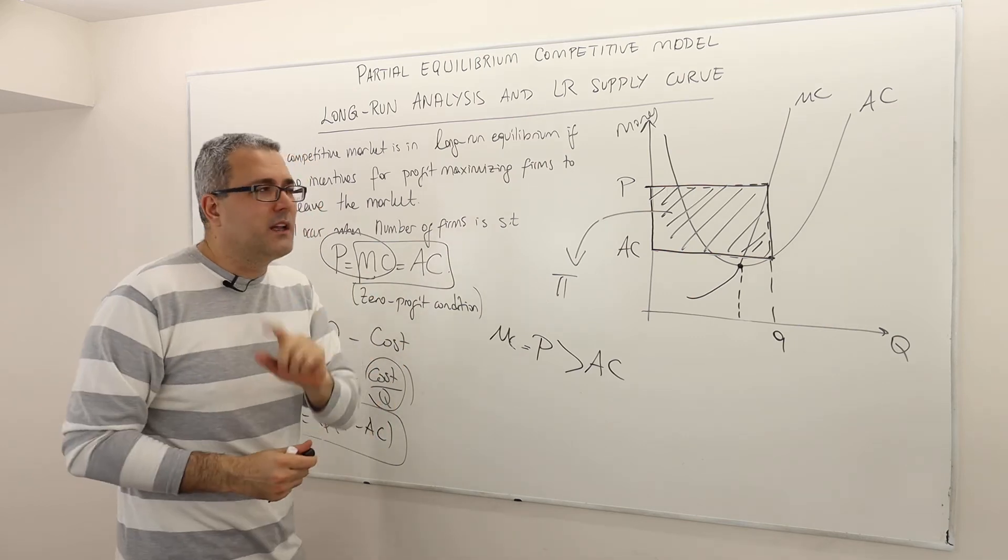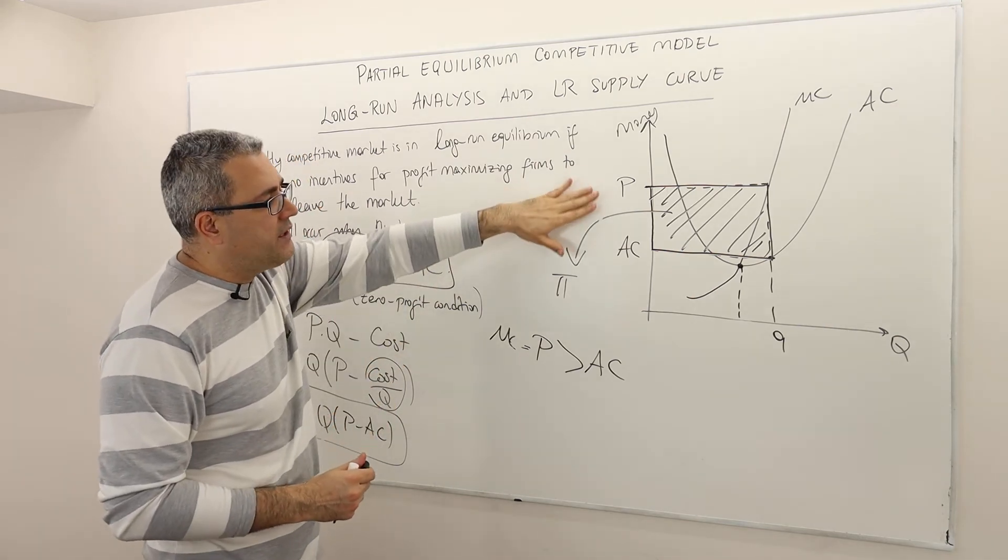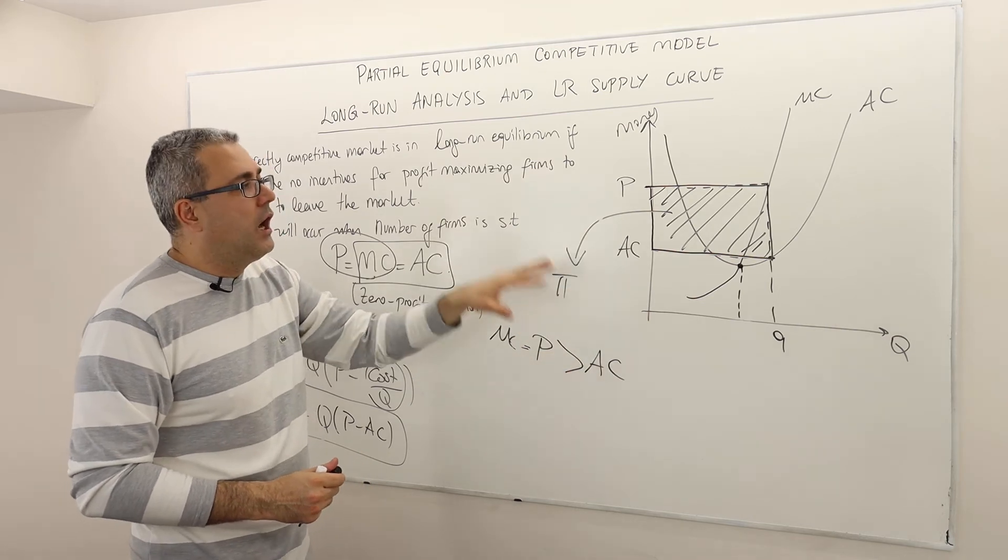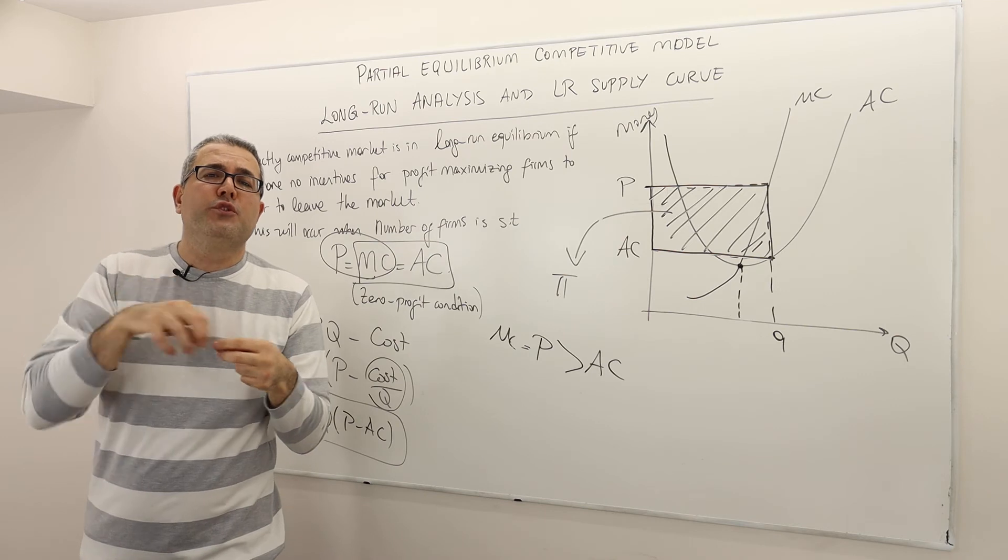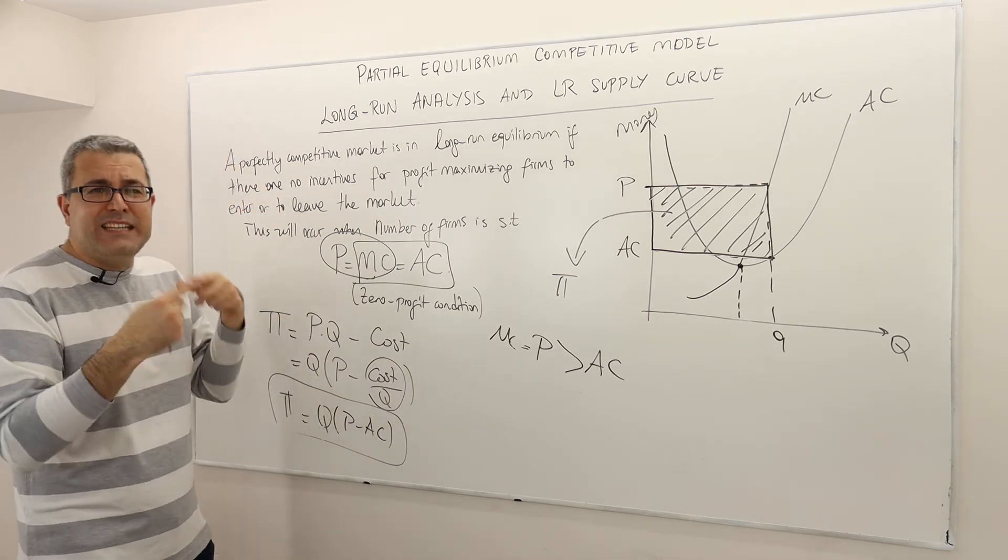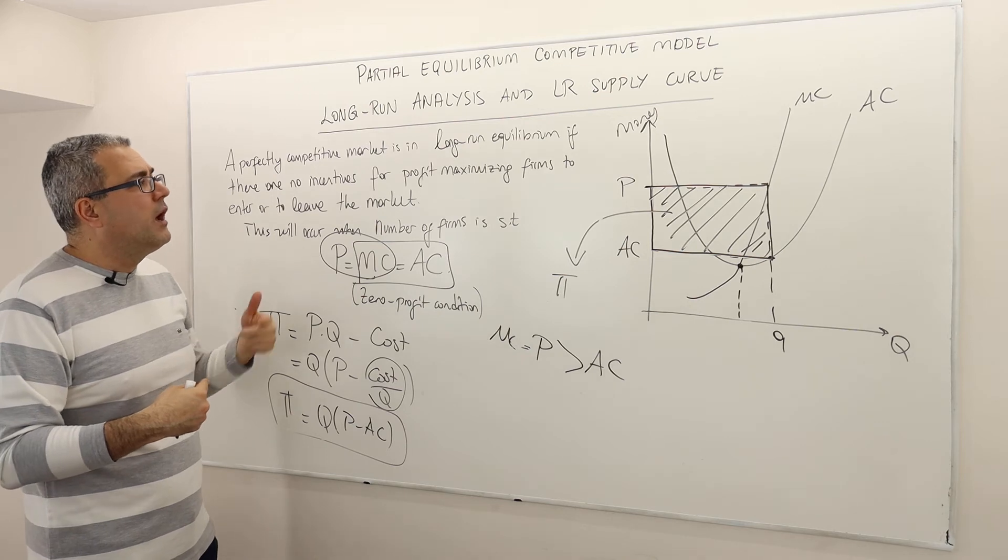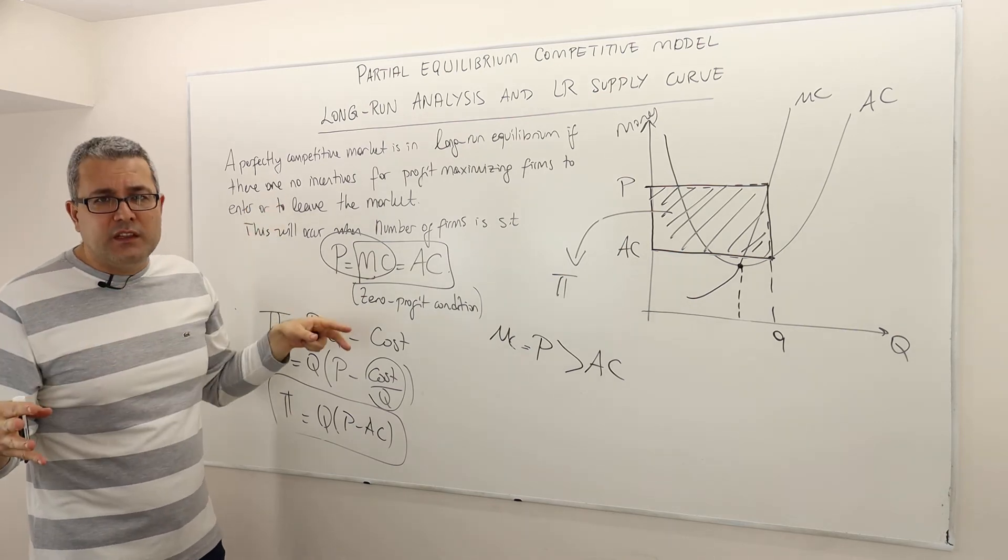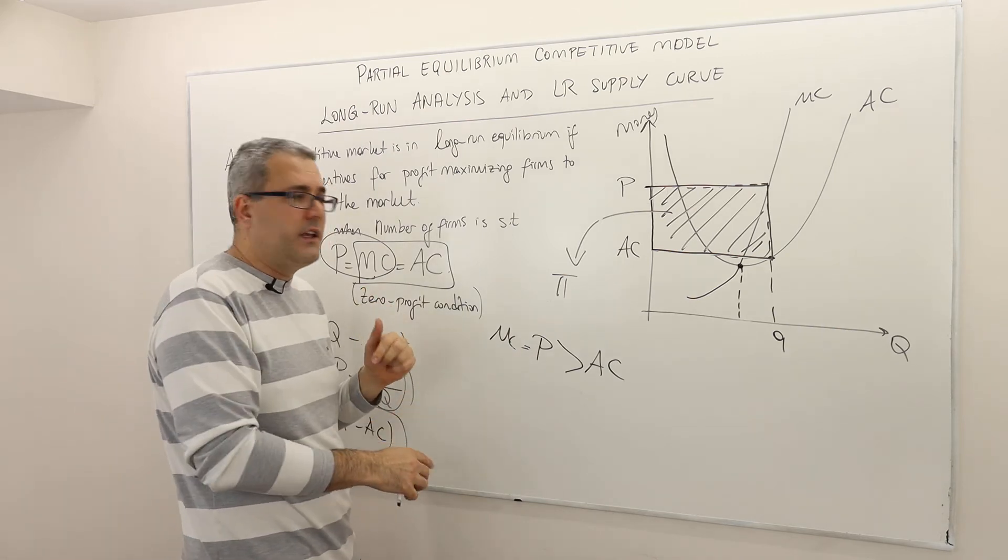The idea is that when price is higher than AC, there is opportunity or incentive for other firms to enter. But remember the definition of perfectly competitive market in the long run equilibrium, there should be no incentives for firm to enter. So therefore P shouldn't be higher than AC.